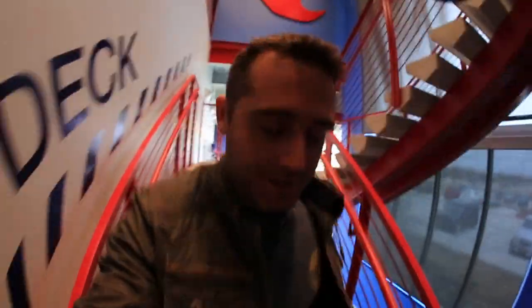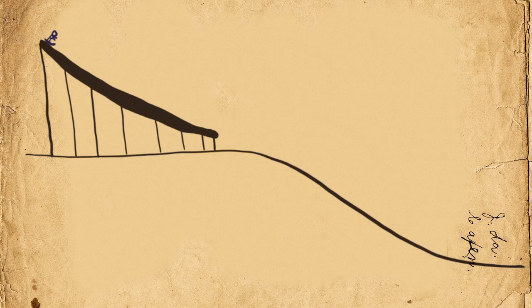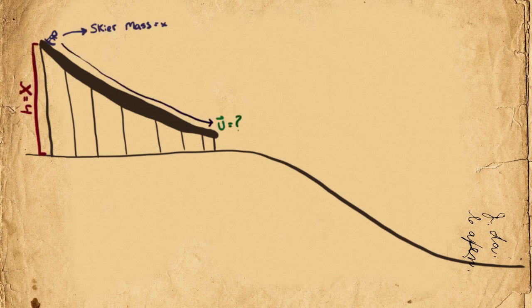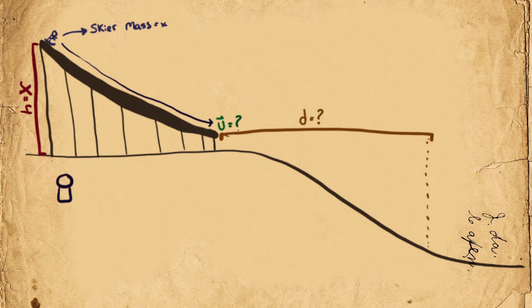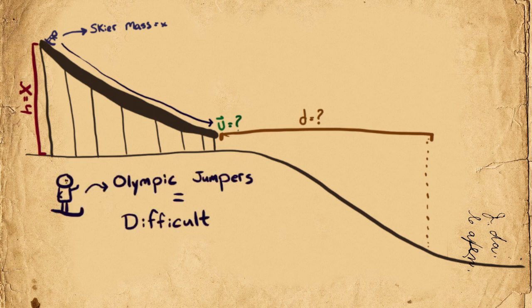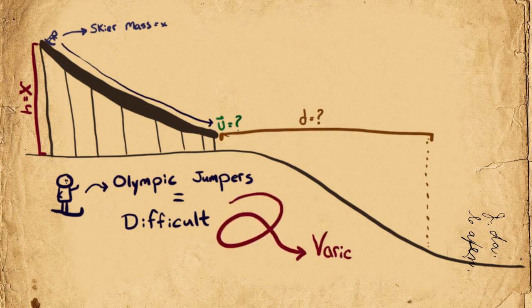I have thought a lot about the physics of ski jumping. You get it in physics problems and it looks a little bit like this: a skier of mass X heads down the ramp with height X — what is the velocity as he leaves, what is the distance he can go? Olympic ski jumpers are not easy to plug into an equation like this because of the variables. Here are the variables.